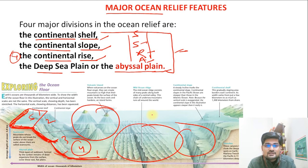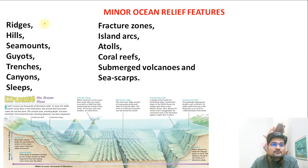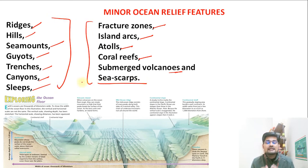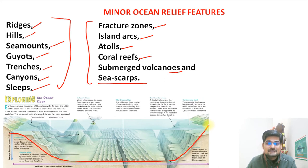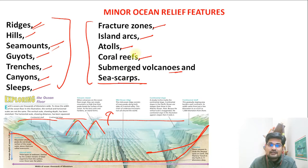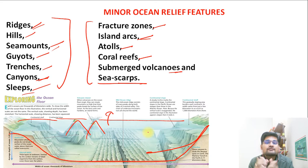Apart from major ocean relief features, there are numerous minor relief features as well. These include ridges, hills, seamounts, guyots, trenches, canyons, deeps, fracture zones, island arcs, atolls, coral reefs, submerged volcanoes, and sea scarps. Most of these are similar to land features we studied in geomorphology. If you remove the water, the ocean floor looks like what you have on land — ridges, valleys, hills, scarps, volcanic arcs, canyons, gorges, and deep valleys. Similarly, on the ocean floor these minor features are very specific to the oceanic environment and named accordingly.